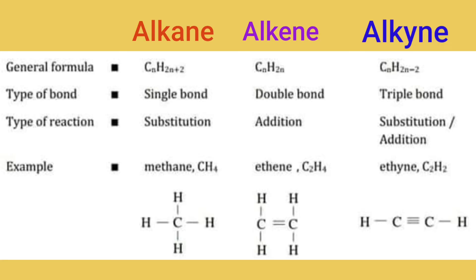For each hydrocarbon type, we look at the general formula, type of bond, and type of reaction. The general formula differs per type. Bond types include single bond for alkanes, double bond for alkenes, and triple bond for alkynes.